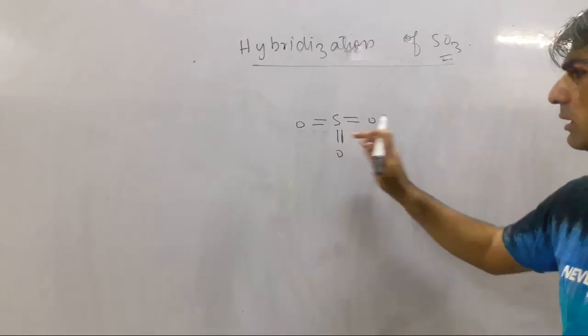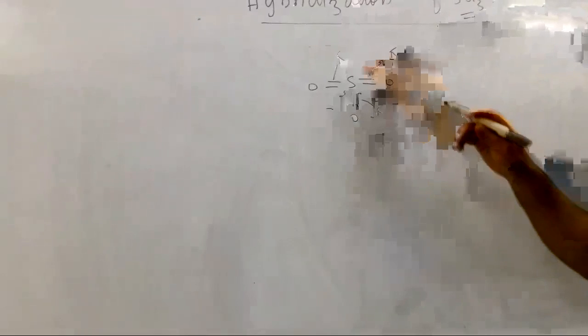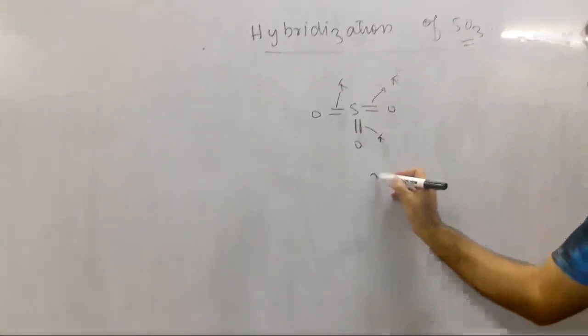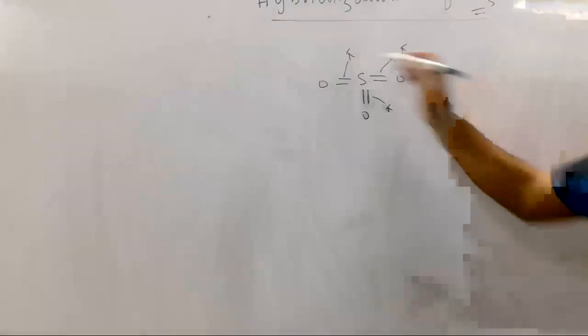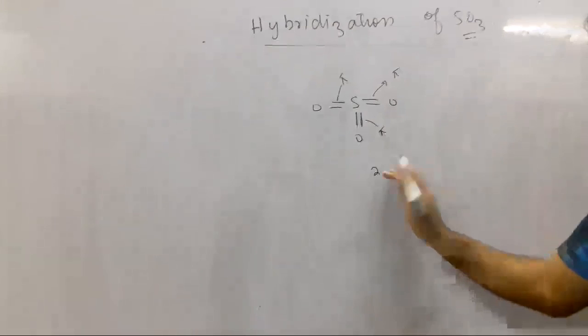There are double bonds - one will be pi, one will be sigma bond. These are the three pi bonds. How many? Three pi bonds.